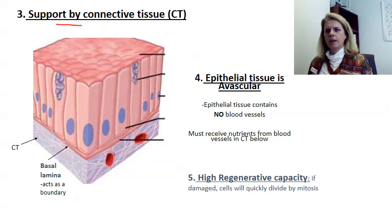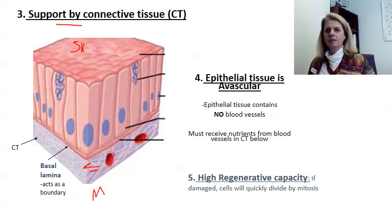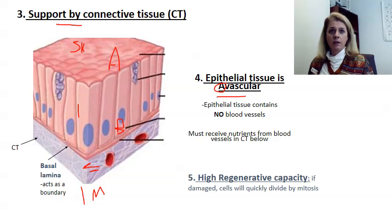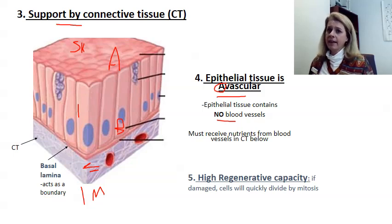Epithelial tissues are supported by connective tissues. Imagine the skin on top, then a connective tissue layer, then a muscle layer below. The connective tissue connects the epithelial layer to the layer beneath it, like muscle. The apical side faces outward and the basal side is in contact with the connective tissue. Epithelial tissues are also avascular — the letter A means non or none, so they have no blood vessels. They must get everything they need from blood vessels in the nearby connective tissue, which are close enough to allow for exchange.